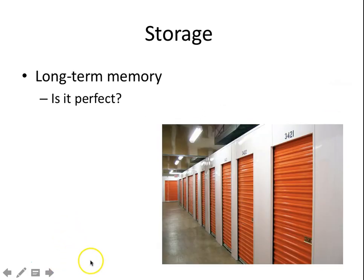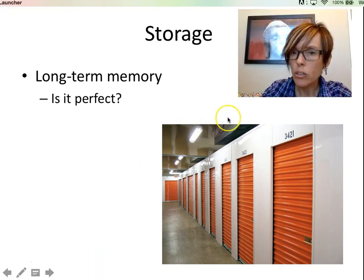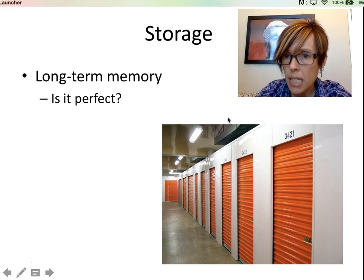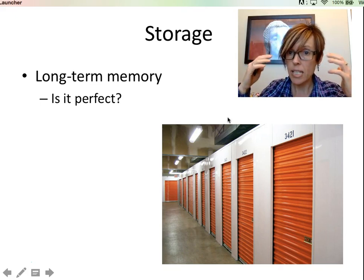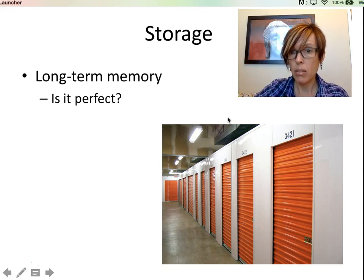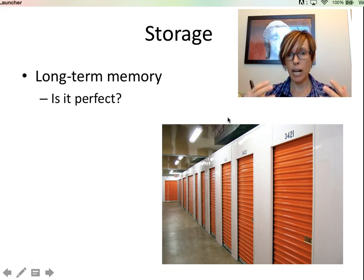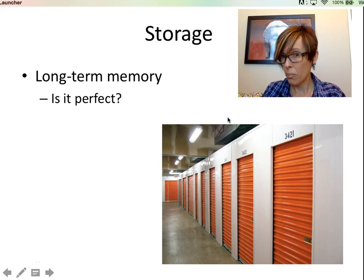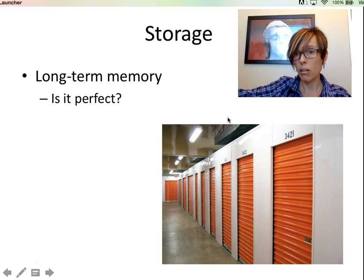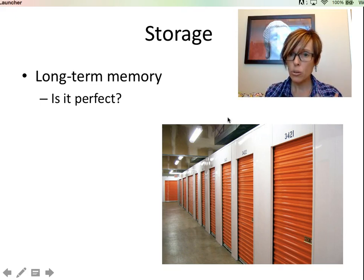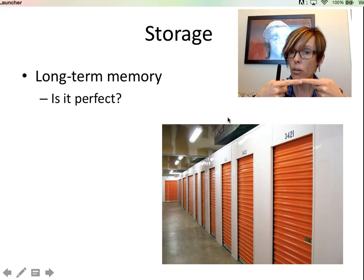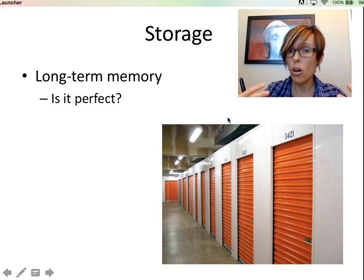From short-term memory, you want to get things into long-term memory. When we talk about long-term memory, we're talking about Hebbian plasticity — making those physical connections between neurons so that when you want to recall something, that information is there not just today, but in a week or a month. Long-term memory takes repetition, repetition, repetition. The more neurons fire together, the stronger they wire together, and the better your chances that information will be stored in long-term memory.